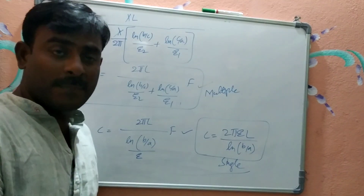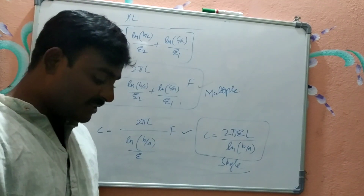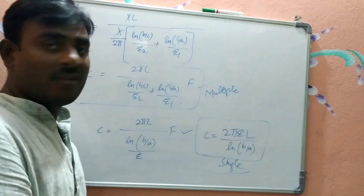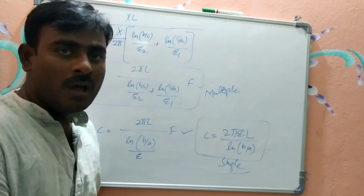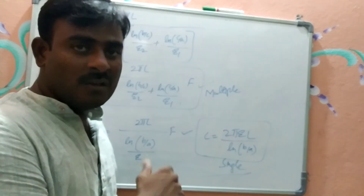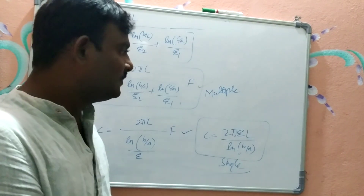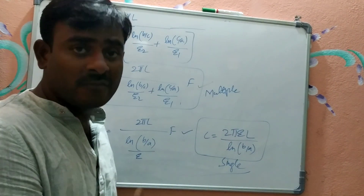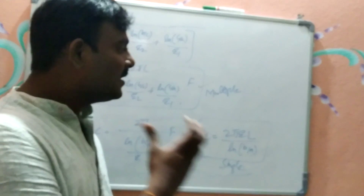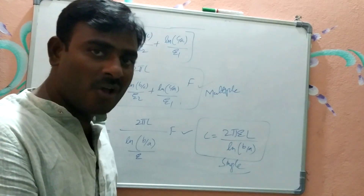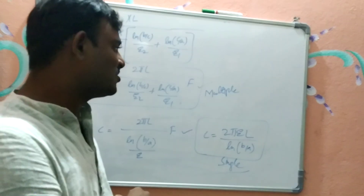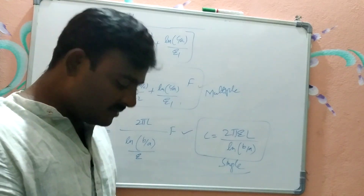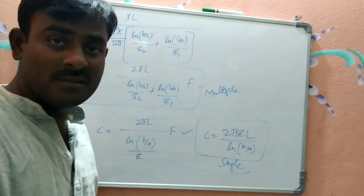This covers the capacitance of a cylindrical capacitor: the multiple dielectric expression is C = 2πL / [ln(b/c)/ε₂ + ln(c/a)/ε₁], and the single dielectric expression is C = 2πεL / ln(b/a). You can find the capacitance of different configurations using the basic laws of electrostatics. Thank you very much.